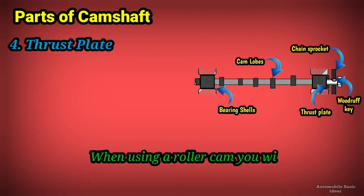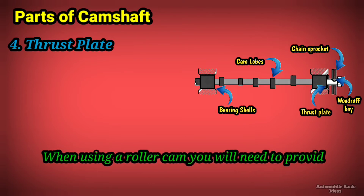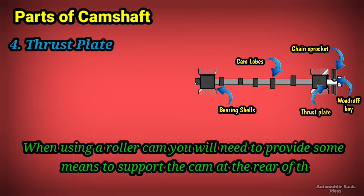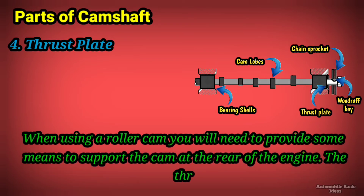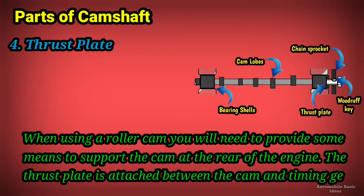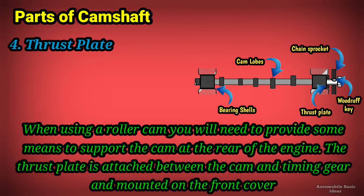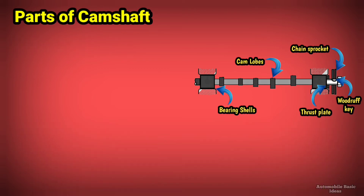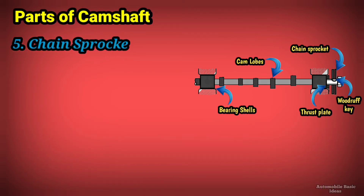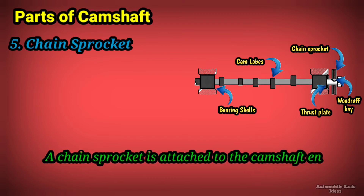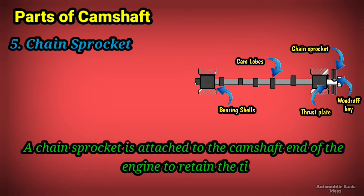When using a roller cam, you will need to provide some means to support the cam at the rear of the engine. The thrust plate is attached between the cam and the timing gear, and is mounted on the front cover for proper end play. Five, chain sprocket — a chain sprocket is attached to the camshaft end of the engine.